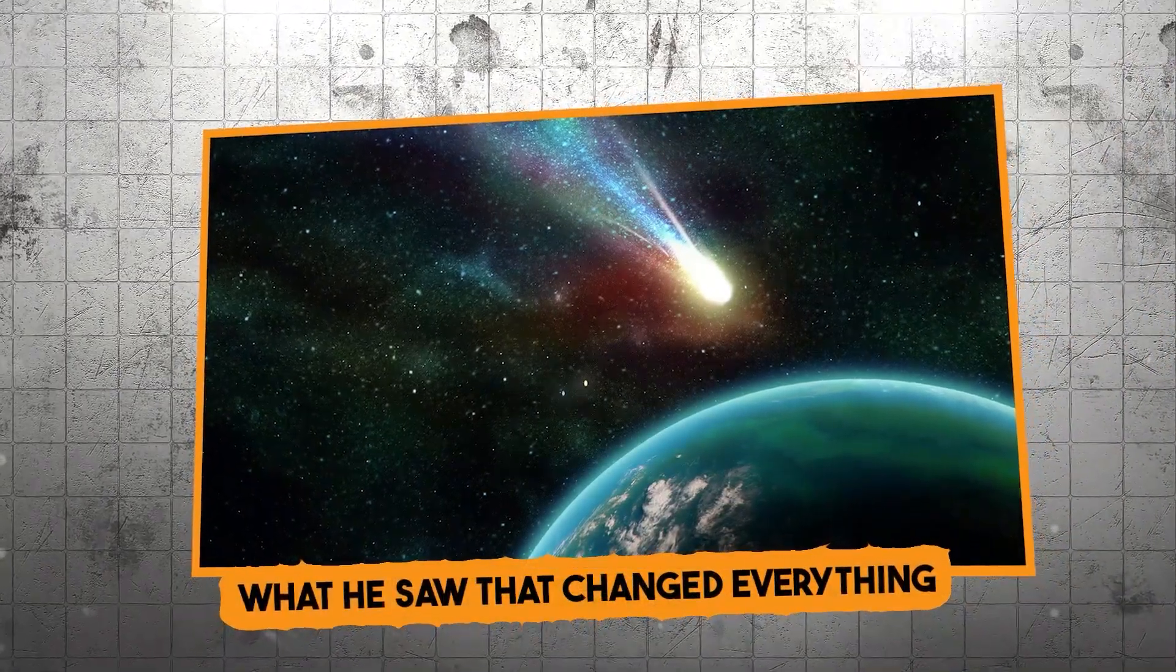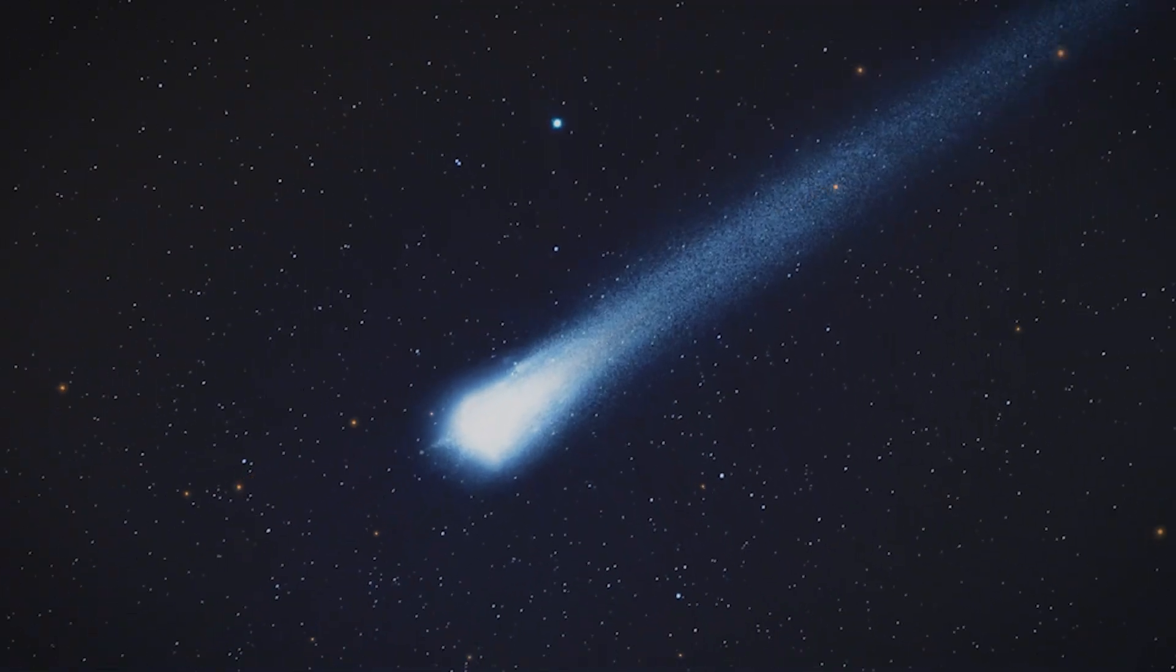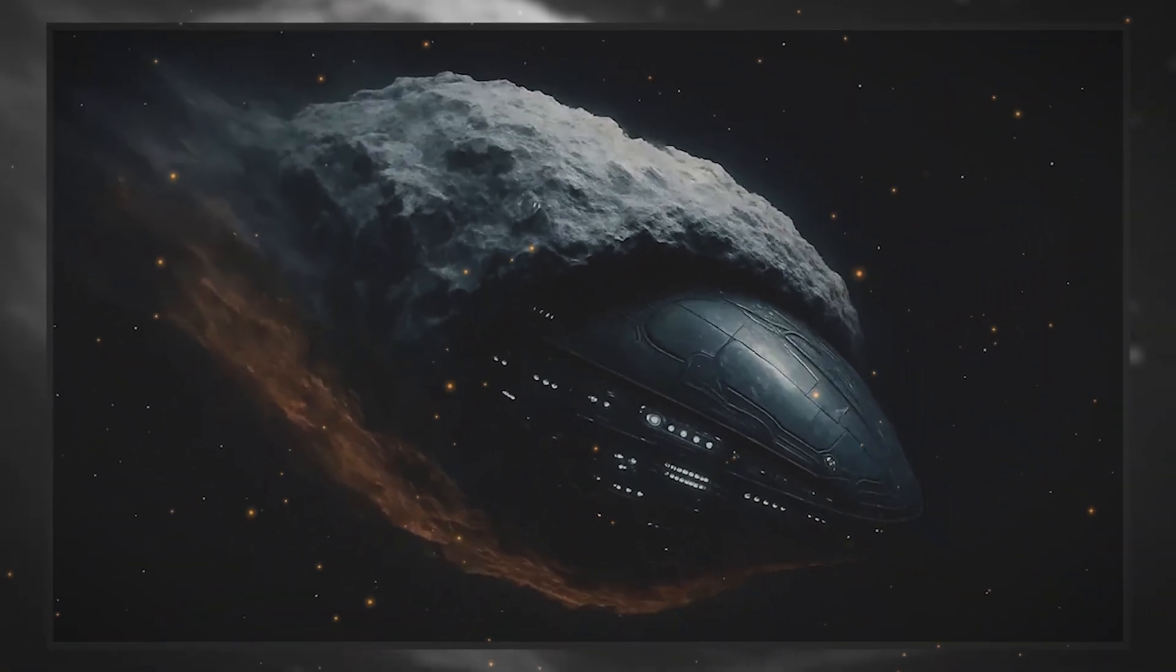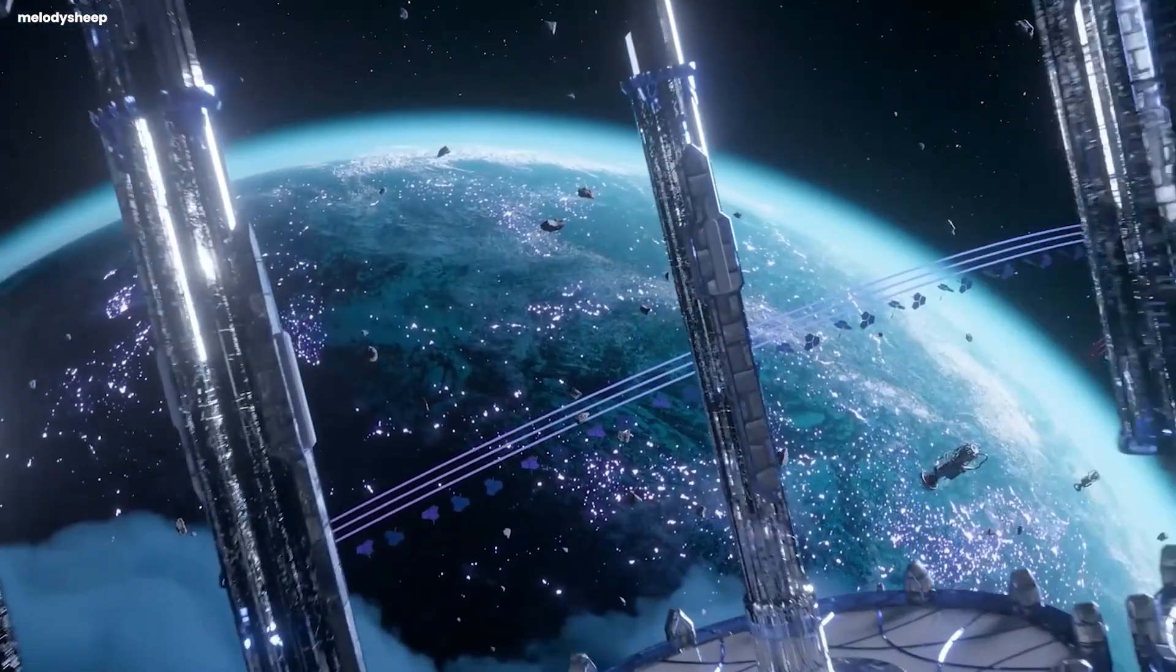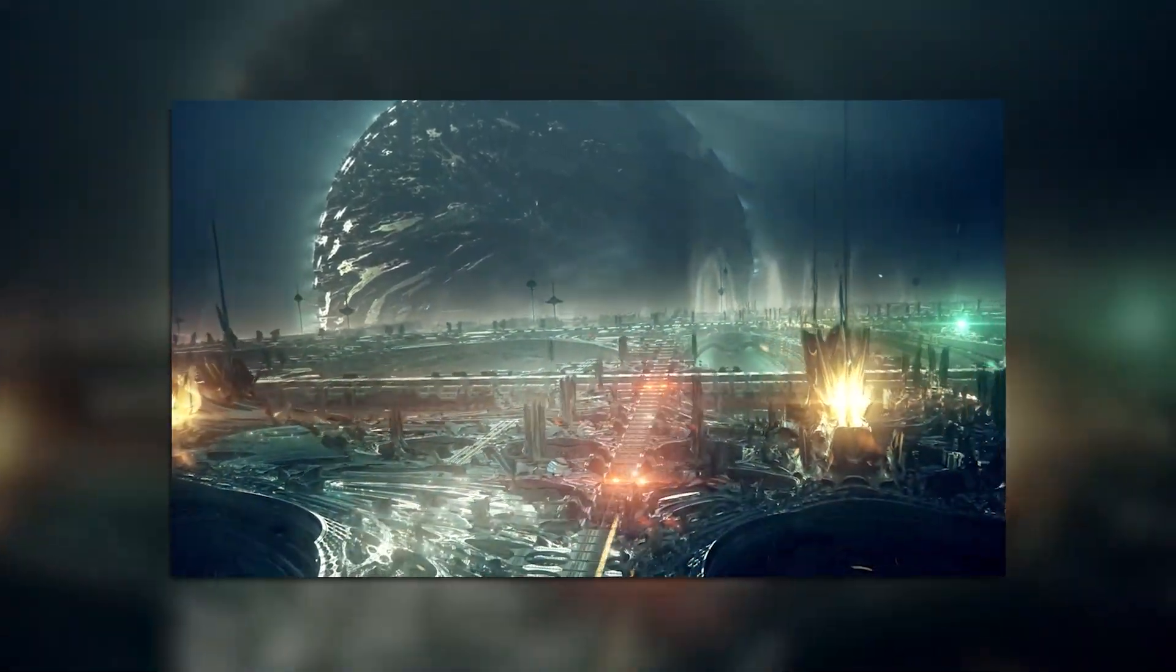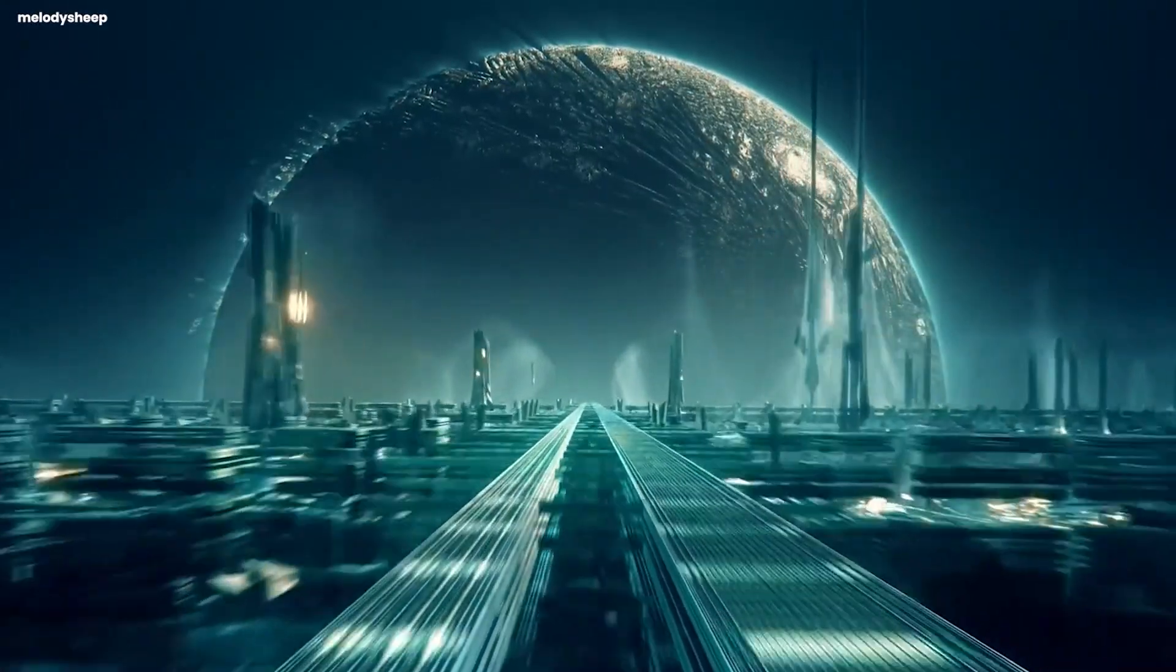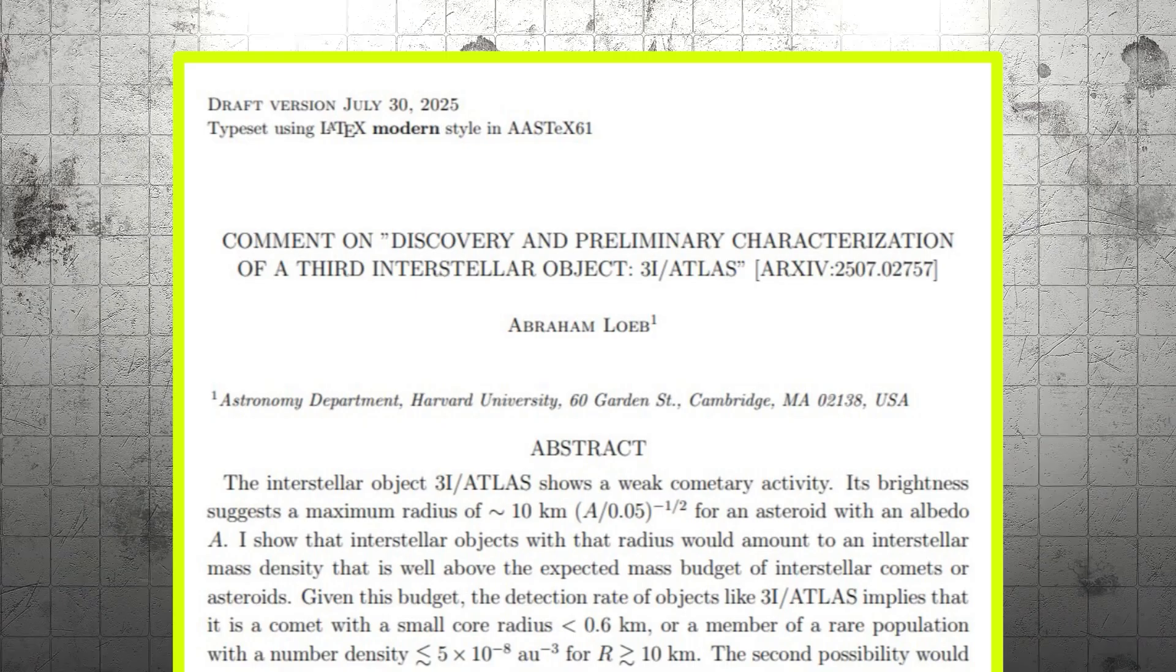What he saw that changed everything. December 19th was the critical test. This was the moment when 3I Atlas would come within 170 million miles of Earth, and if this thing had any kind of propulsion system or intelligent control, this would be the time to use it. Think about it from the perspective of an alien probe. You've just spent billions of years traveling through interstellar space, and now you're approaching the only planet in this solar system that has life and civilization and radio signals. You wouldn't just fly past and ignore it.